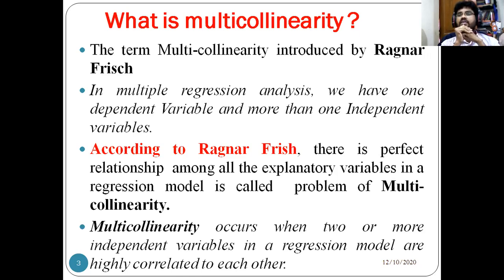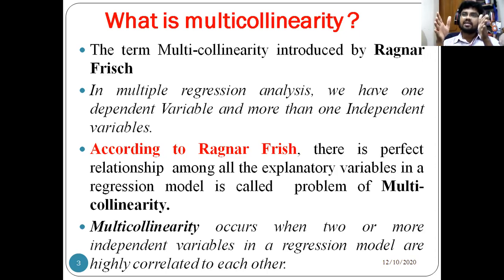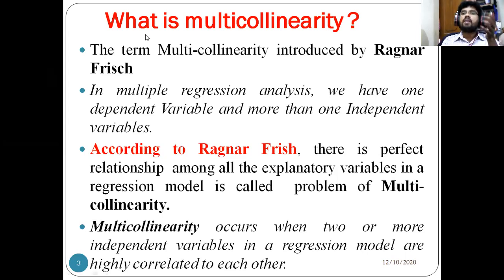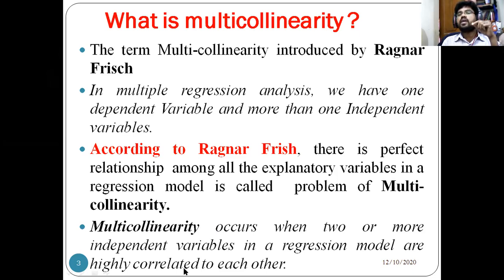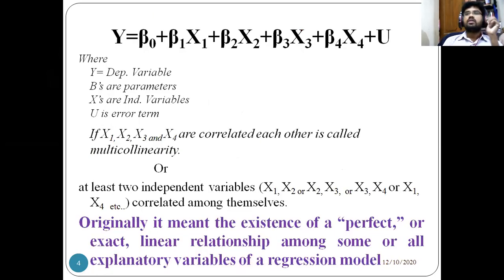Multicollinearity occurs when two or more independent variables in a regression model are highly correlated to each other. Generally, when taking multiple regression, there may be some relationship between two independent variables, but we cannot say multicollinearity is a problem unless the correlation between independent variables is very high. When you observe high correlation between the independent variables, that is called multicollinearity.